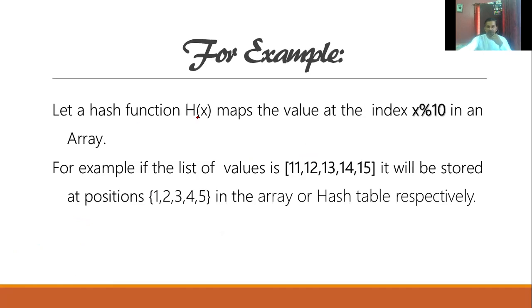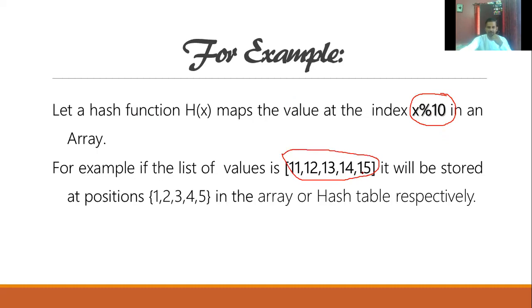Let's consider a simple example. The hash function h(x) maps the value at index x modulus 10. So x is the value, which is taken modulus 10, and whatever remainder we get will be the key value — the corresponding index of the array where we store the given value. We consider elements: 11, 12, 13, 14, 9, 15.